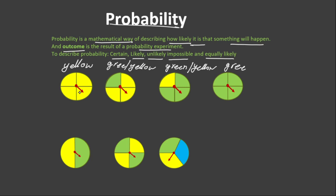When we talk about the probability of the arrow landing on each part of the spinner, we use the words certain, likely, unlikely, impossible, and equally likely. The probability of the arrow landing on yellow is certain because there is only one color on each part of the spinner. The probability of the arrow landing on yellow in the second spinner is likely, because out of four equal parts of the spinner, three parts are yellow.